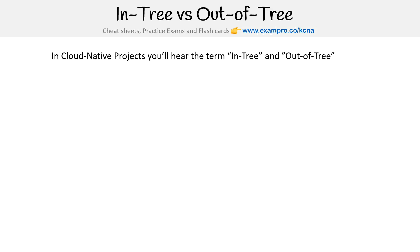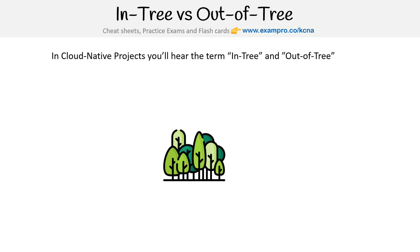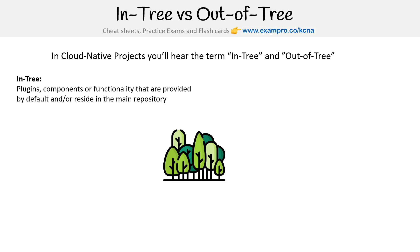In cloud native projects, you'll hear the terms in-tree and out-of-tree. Here's a little forest to have a visual. In-tree, the way I describe it, is plugins, components, or functionality that are provided by default, or that reside in the main repository. Think of in-tree as internal plugins — things that come by default with the project.